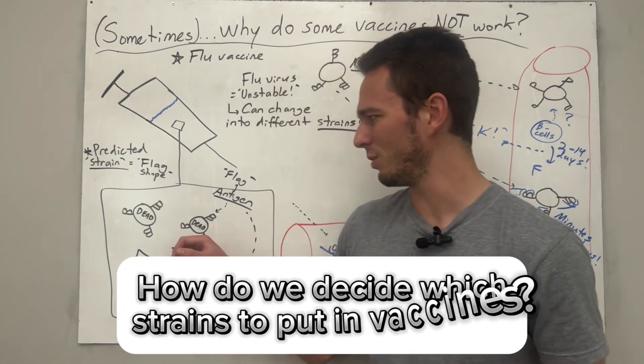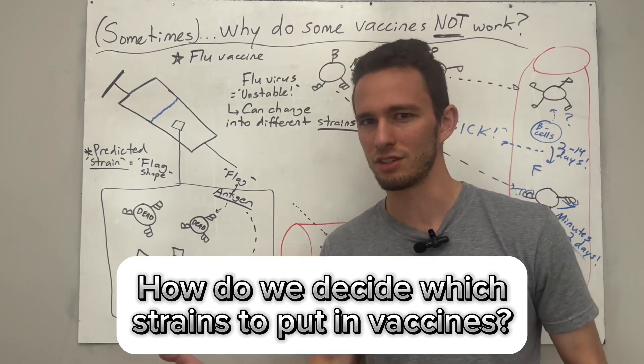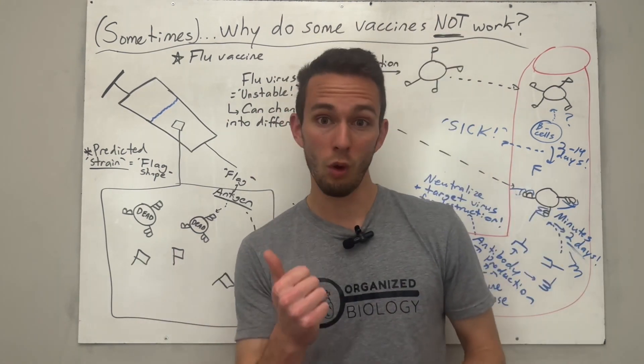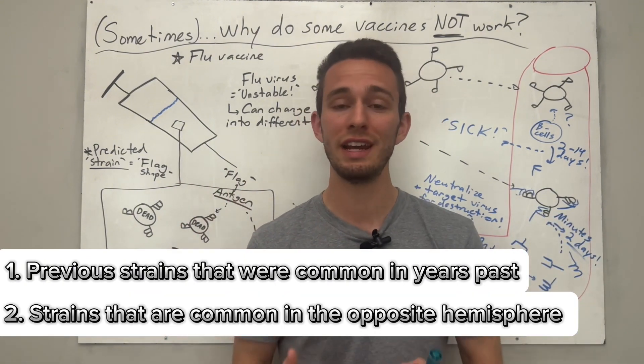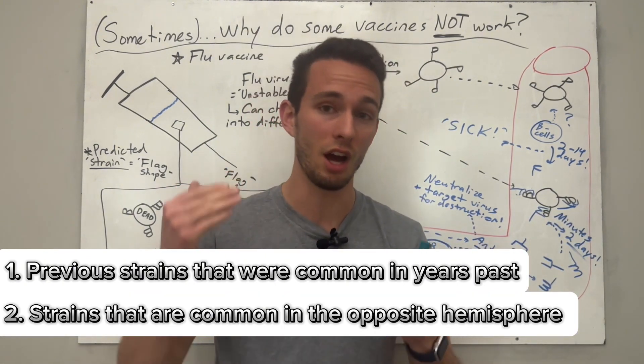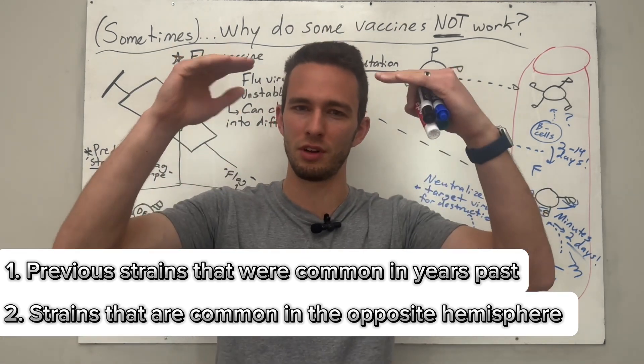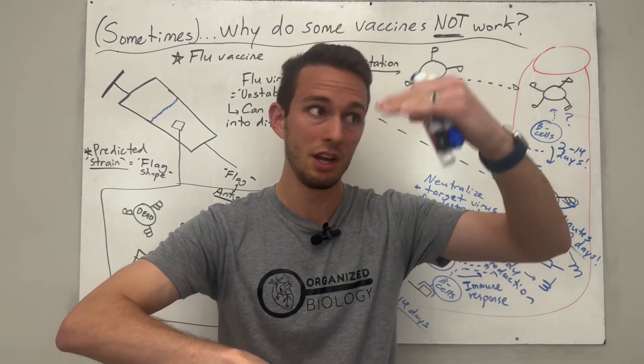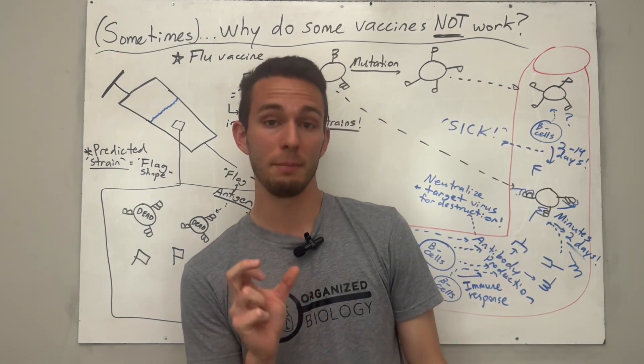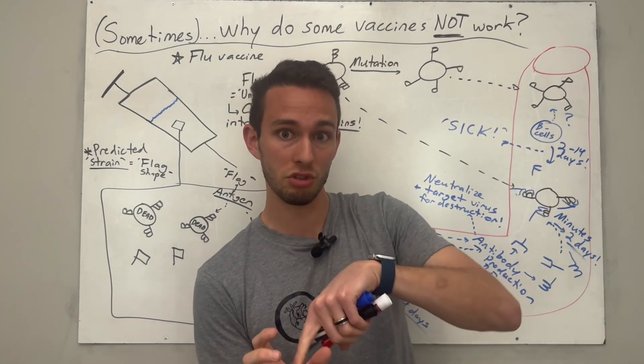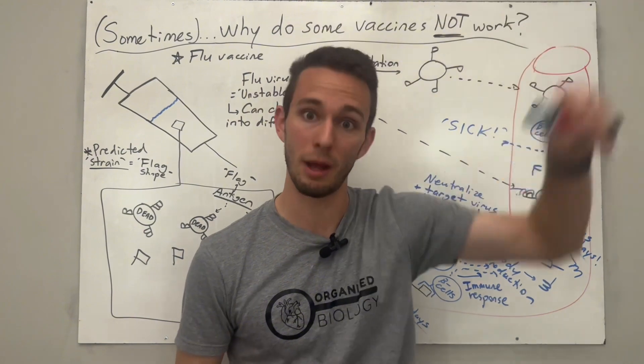So the question is, how do we actually decide what strains to put in our vaccines? Well, it's usually based off a couple things. Number one: previous strains that were kind of popular the last year, as well as strains that are actually rampant in the other hemisphere. So if we're in the northern hemisphere, the southern hemisphere is actually in the opposite season. So if they're in the winter season, we can see what strains of flu are going around there and potentially predict, hey, maybe we want to put those strains in our vaccine for our upcoming winter.